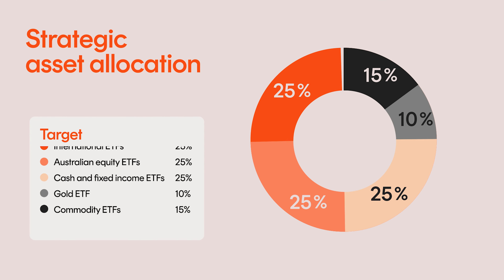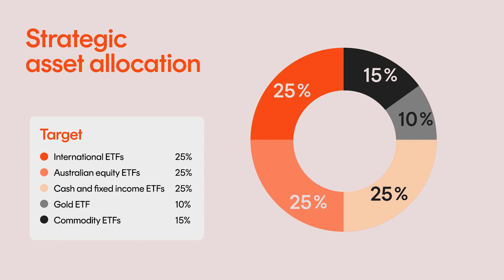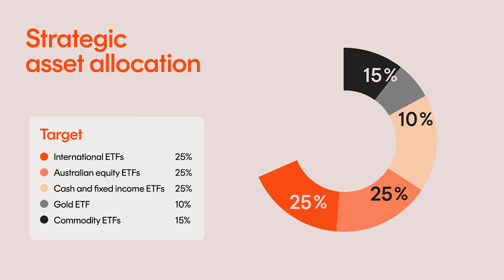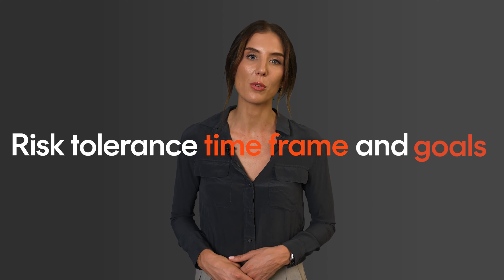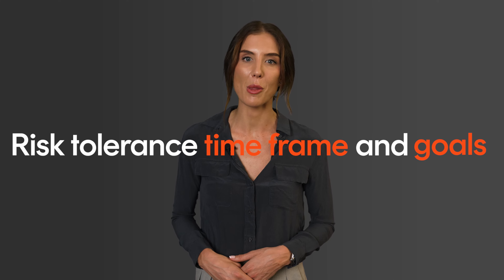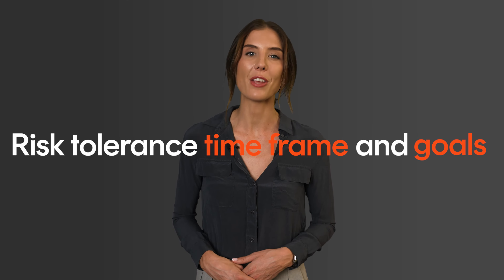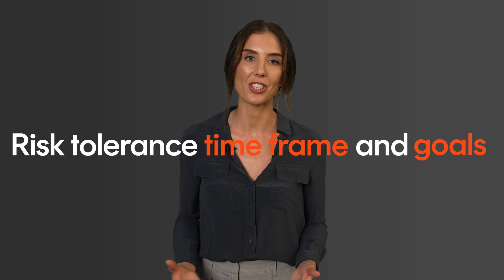The first is called Strategic Asset Allocation. This involves setting targets for how much of your portfolio is allocated to different assets, then periodically rebalancing your portfolio back to those allocations when they change during market movements.